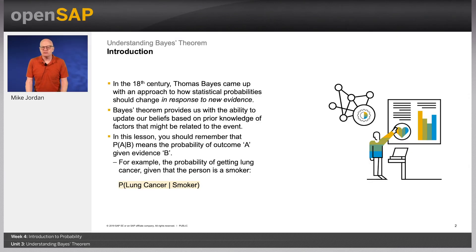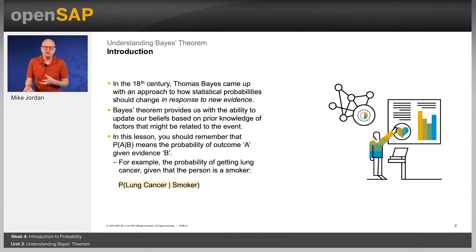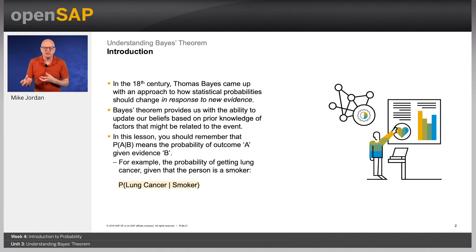In the 18th century, Thomas Bayes came up with an approach to how statistical probabilities should change in response to new evidence. This was developed later on by Pierre Simon Laplace and Sir Harold Jeffries.